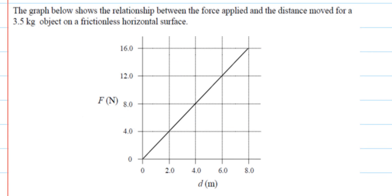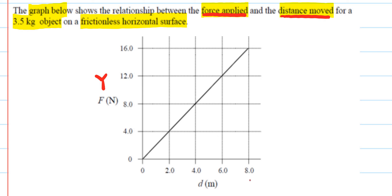Let's take a look at a graphing question. The graph shows the relationship between the force applied and the distance moved for a 3.5 kilogram object on a frictionless horizontal surface. Force is on the y-axis and distance moved is on the x-axis.